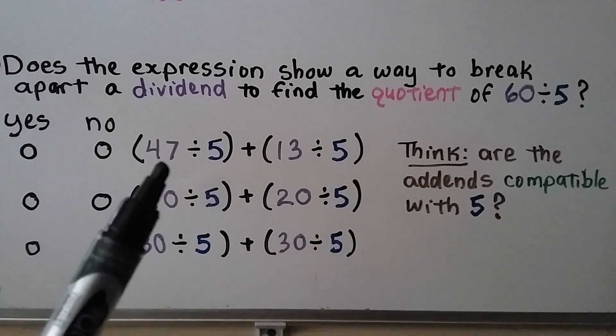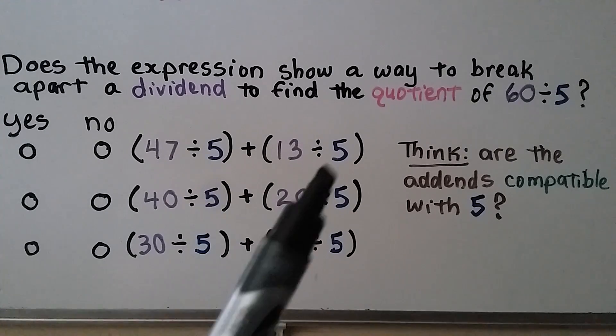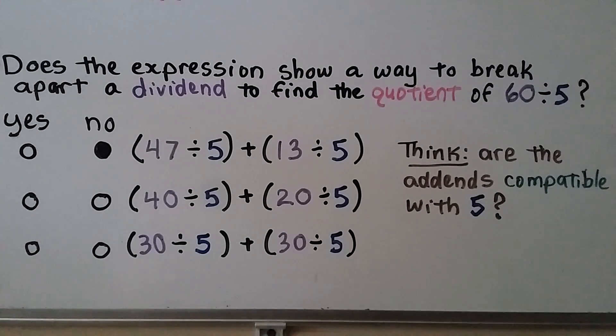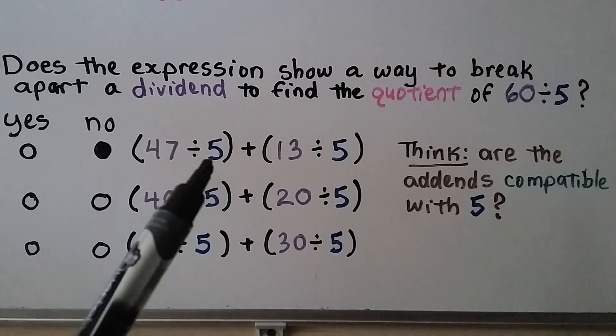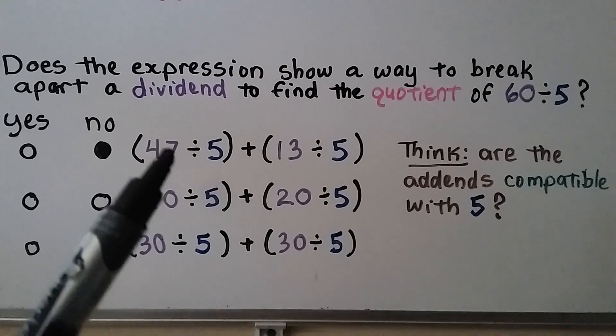Well, 47 plus 13, that does equal 60. But are 47 and 13 compatible with 5? No. 47 and 13 are not compatible with 5. They're not multiples of 5.